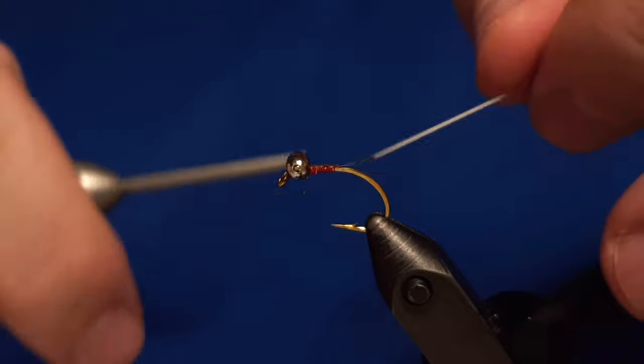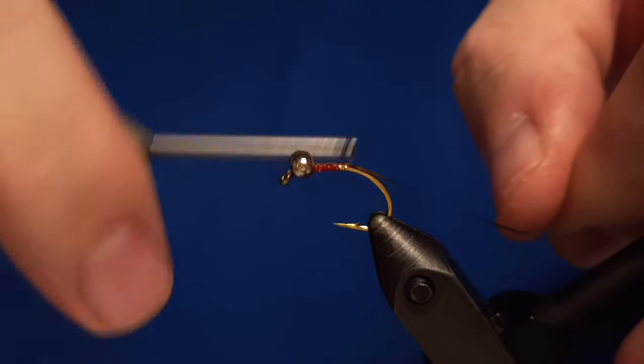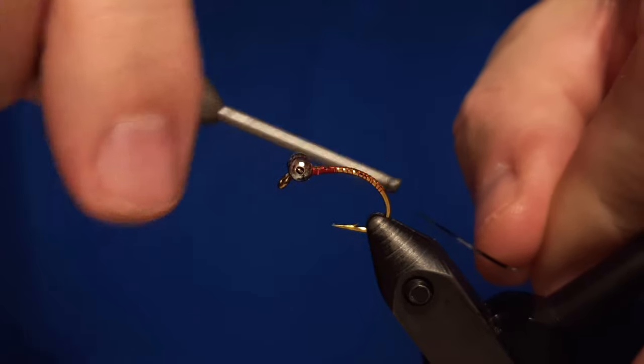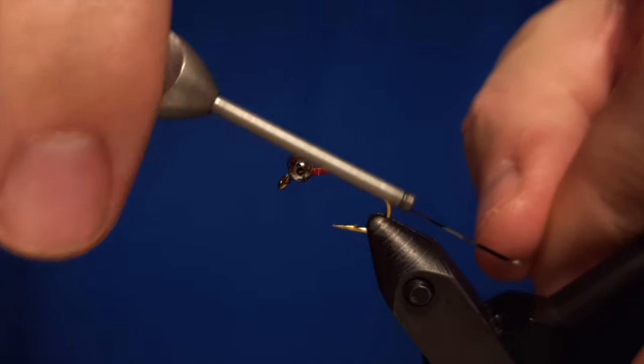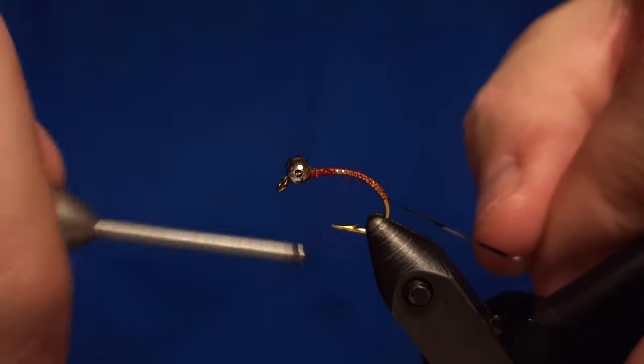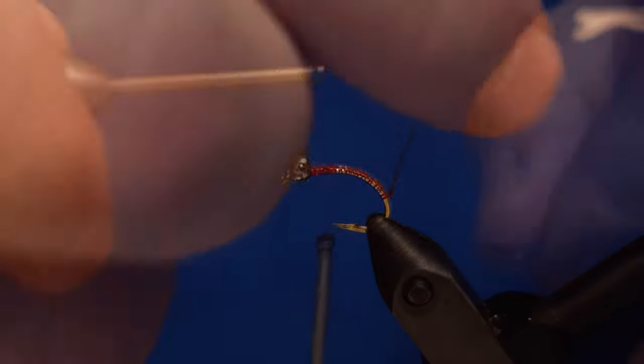The body of the fly is made out of flat tinsel, so we are using silver tinsel for it. We'll wrap that around the body of the fly and get the thread in position.